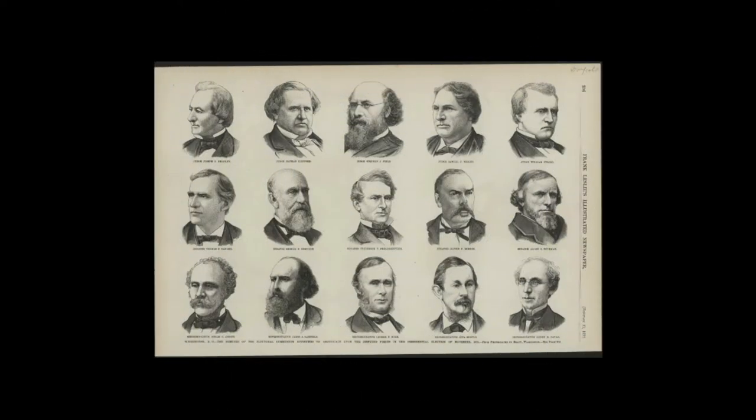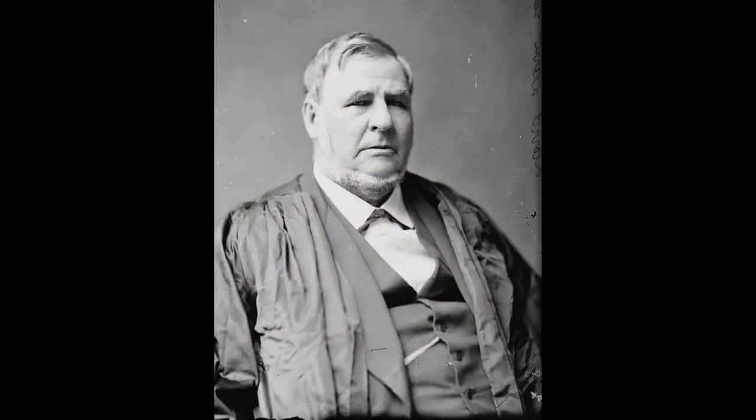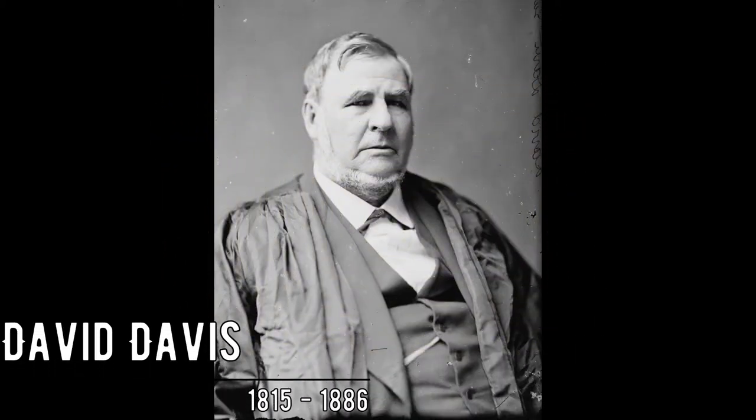A commission was formed to figure out which votes should be counted. The commission was composed of seven Democrats, seven Republicans, and one Independent. The Independent, Supreme Court Justice David Davis, refused to serve, and a Republican was chosen to replace him. The commission voted along party lines, and Hayes was elected president.